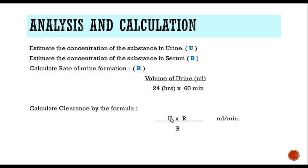Next, we use it in the formula. The formula for clearance is U × R / B, where U is the concentration of the substance in the urine, B is the concentration of the substance in the blood, and R is the rate of urine formation. Some books will say U × V / B, where V they give a confusing meaning of volume — we want the rate of urine formation. That is the volume of urine collected in ml over 24 hours expressed in minutes, so 24 hours × 60 minutes per hour. The volume of urine collected divided by 24 × 60 will give us the rate of urine formation in ml per minute. The concentration of the substance in the urine and the blood should be expressed in the same units, like mg per deciliter.